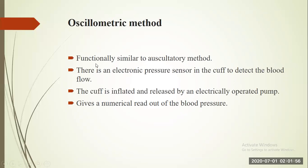Another method is the oscillometric method, which is functionally similar to the auscultatory method. Here, an electric pressure sensor in the cuff detects blood flow. There is no manual pump — the cuff is inflated and deflated by an electrically operated pump, and blood pressure readings are given numerically.